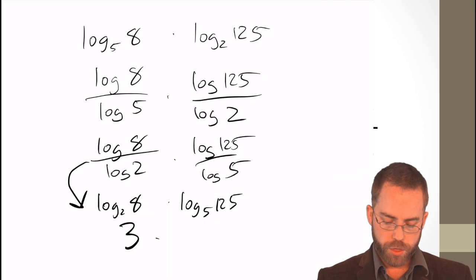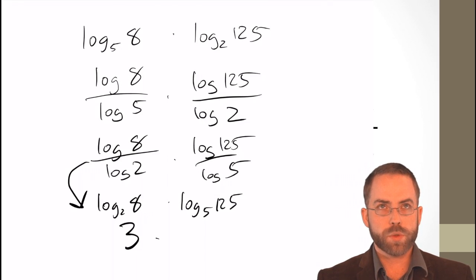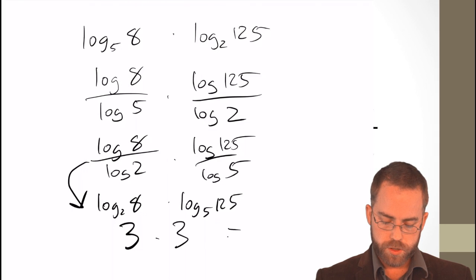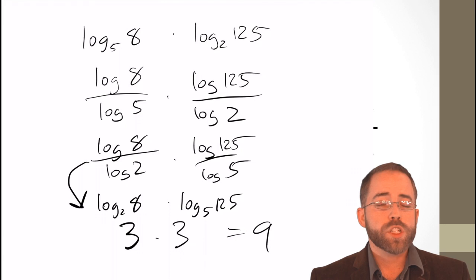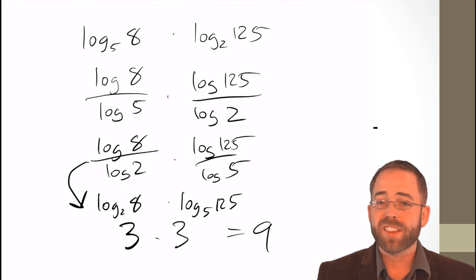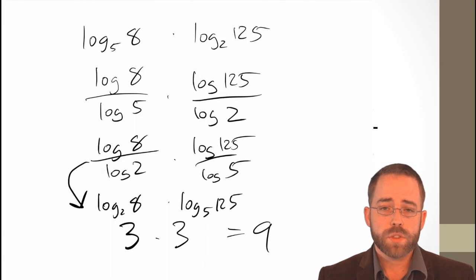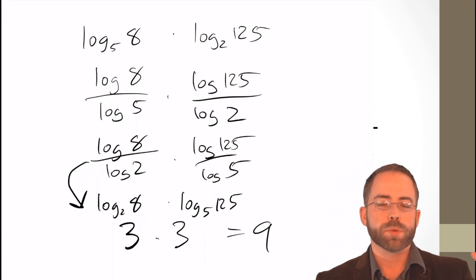What power do I put on 5 to get 125? Answer is 3, right? 125, yes. And therefore, all together, answer is 9. So, the change of base formula, if you really know it, then you can even use it backwards. It's an equation. It's reversible in directions.